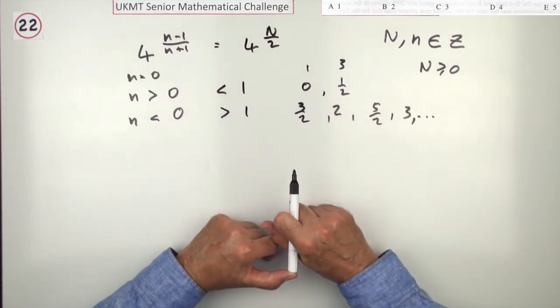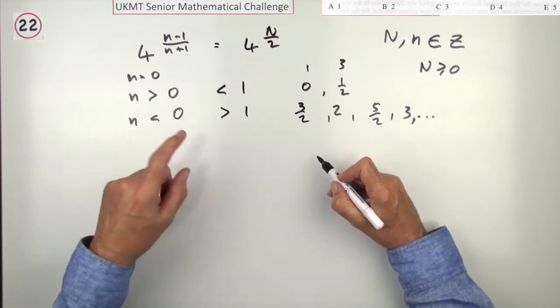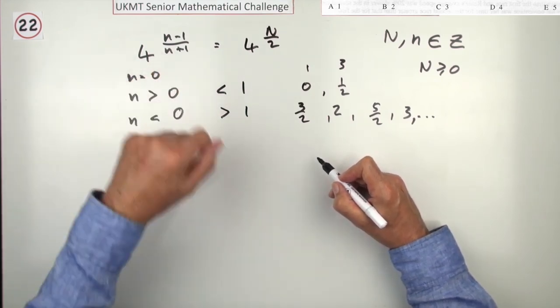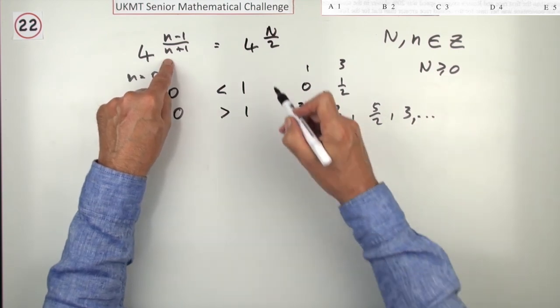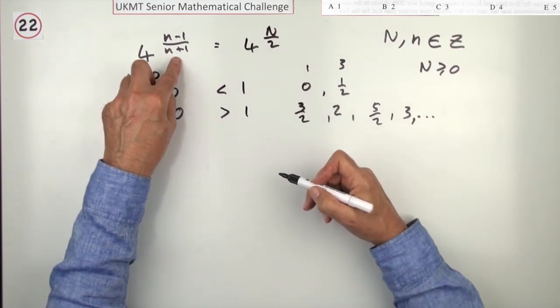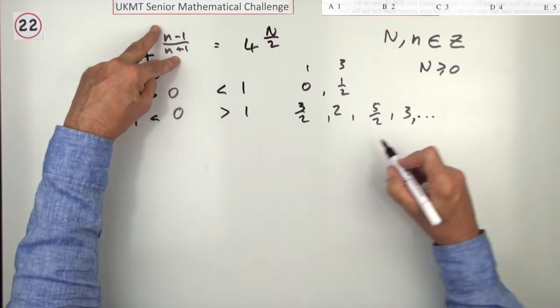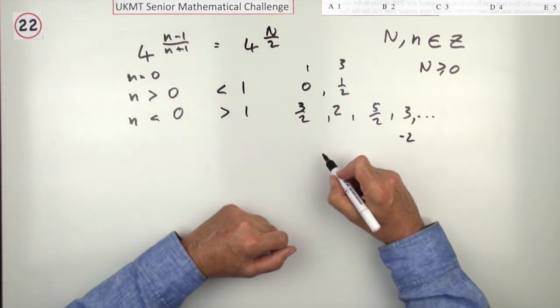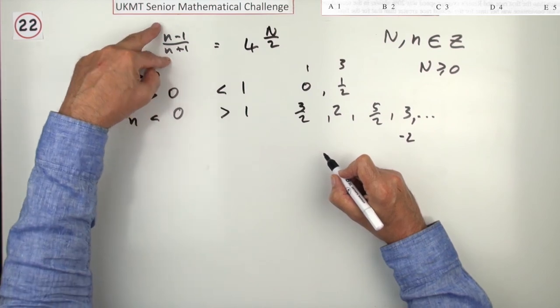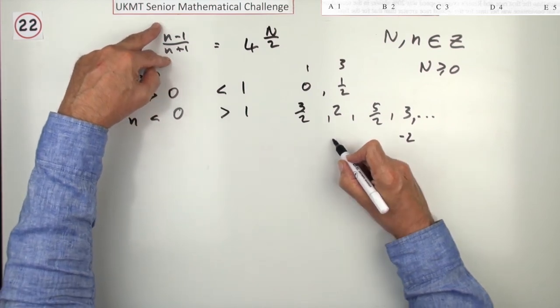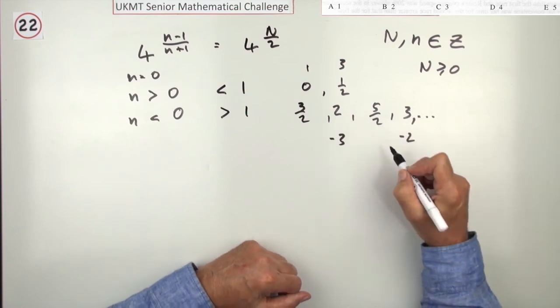Now, the negative numbers. Well, negative numbers, the first one would be negative 1, which is no use because that gives a 0 in the denominator. Negative 2, that's okay because I'm looking for 2s, but negative 2 gives a negative 1. That gives negative 3 over negative 1. So, there you go. That's negative 2. Negative 3 gives a negative 4 over a negative 2, which is a 2. So, that one's been jumped.